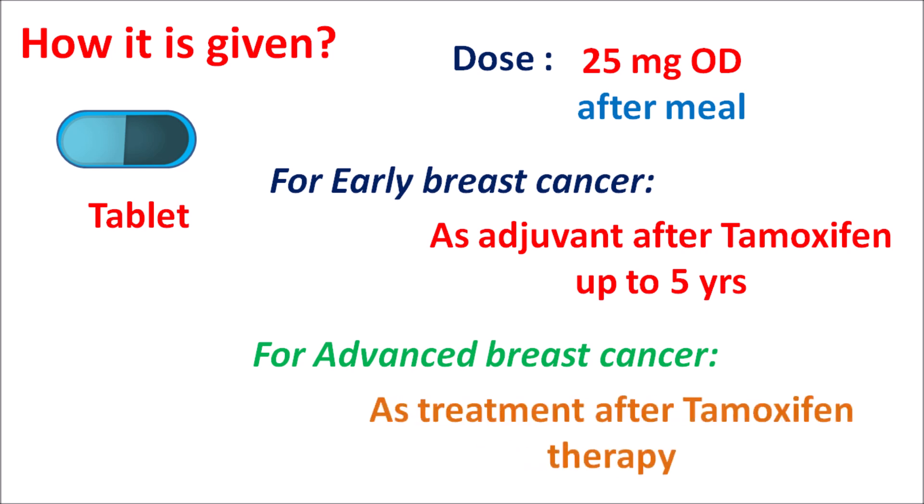In summary, exemestane is a steroidal aromatase inhibitor. Because of its steroidal structure, it produces irreversible inhibition of the aromatase enzyme, and it is indicated for the treatment of breast cancer in postmenopausal women. Hot flushes, arthralgia, and fatigue are the important side effects. When prescribed for longer periods, bone mineral density may be reduced, and vitamin D supplementation may be required in patients with vitamin D deficiency.